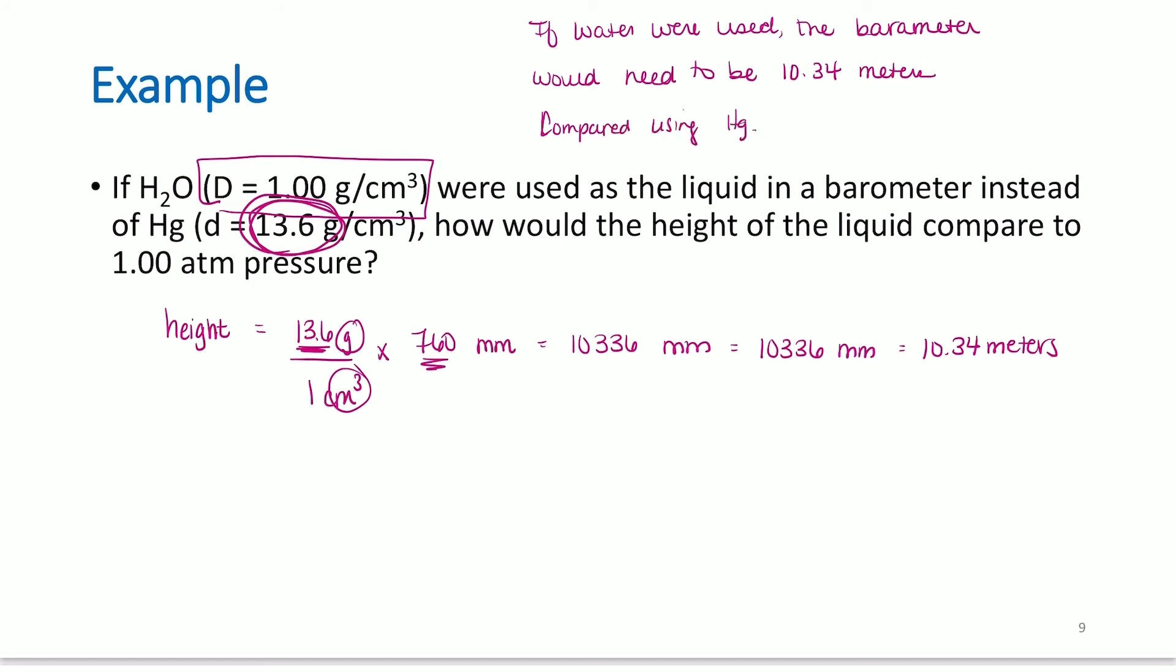Like, if a barometer with mercury was 1 meter, it would be 10.34 meters with water. A lot bigger. So we use mercury because mercury is really, really dense.